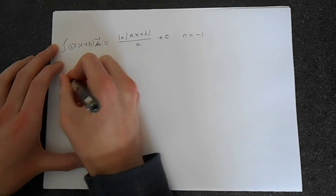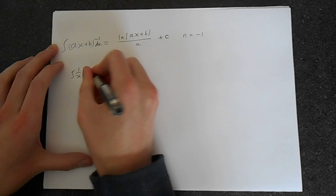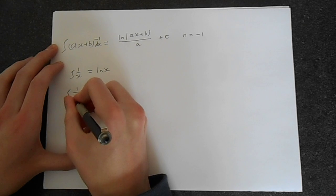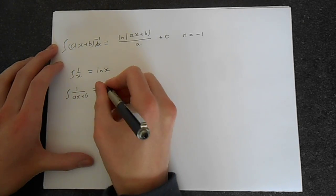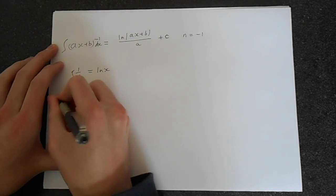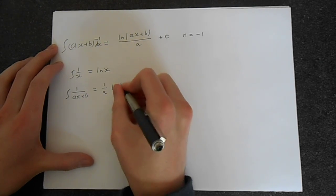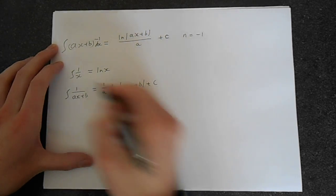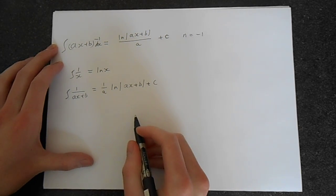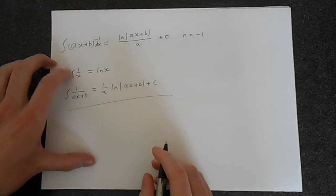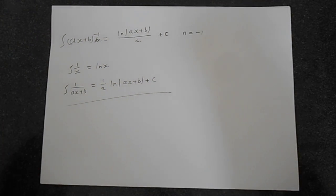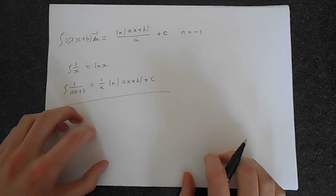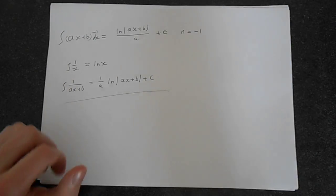This formula makes sense because the integral of 1 over x is the natural logarithm of x. So for the integral of 1 over ax plus b, the factor of 1 over a comes out in front of the natural logarithm of ax plus b, plus c — that's the origin of that formula. So that's how you deal with brackets raised to powers. Hopefully this is helpful and thank you very much for watching.